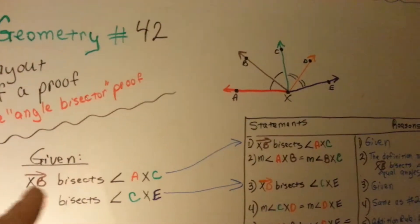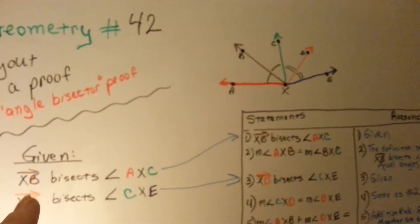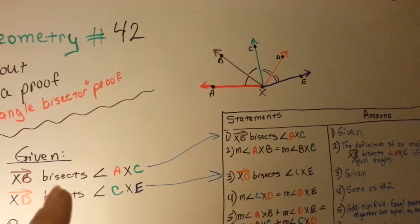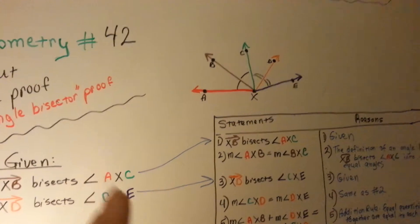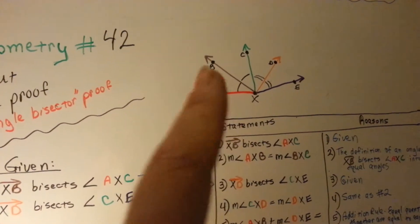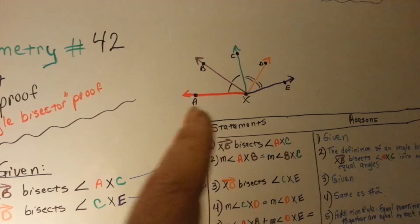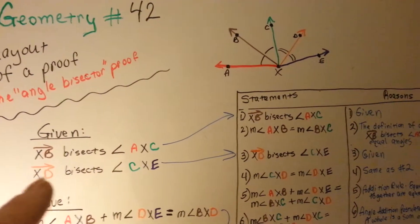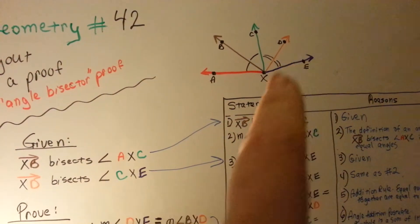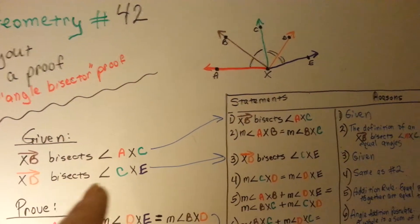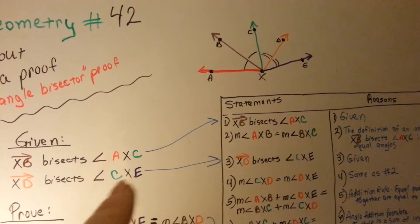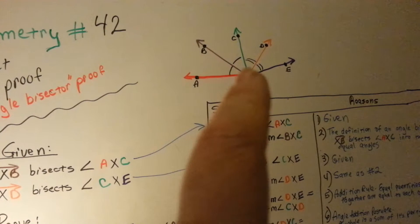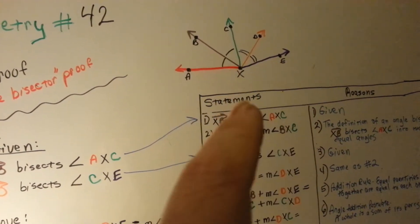Given: ray xb, the brown one, bisects the angle axc — the red and green one. So the brown one is bisecting the red and green one. That's given. Ray xd, the orange one, bisects angle cxe — the green and purple one. So they're saying the brown one bisects the red and green, and the orange one bisects the green and purple.